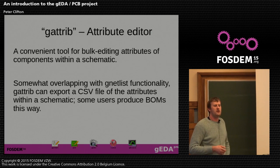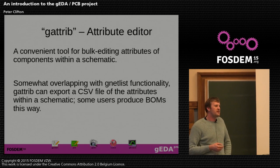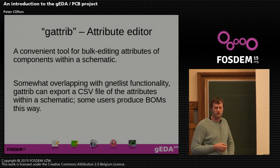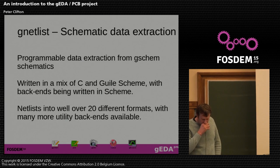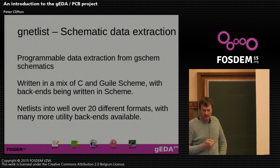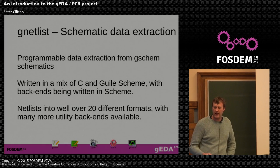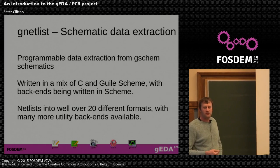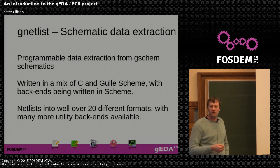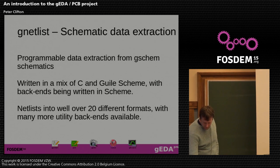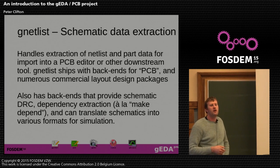gnetlist is a critical part of the tool chain. Up to this point we've got pretty graphics in a file format you won't read in Inkscape. gnetlist extracts useful information from our schematics. It's written in a mixture of C and Guile Scheme — to make sure no one can contribute to it. It outputs netlists in over 20 different formats, with additional backends targeting things like design rule checking and utilities like dependency generation. For example, you can run a gnetlist backend that emits a make-depend, finding that a master schematic also depends on sub-schematics and symbol files.